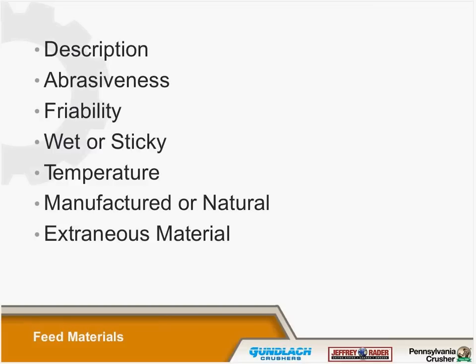Let's talk about describing feed material. We start with the size and shape of the material — is it slabby, round, or regular in shape? How abrasive is it? What is its Mohs hardness, which is a relative index from diamond at 10 down to something soft like rock salt? You'll also hear us ask about Hardgrove Grindability when talking about coal, and Bond's Work Index when talking about limestone. These are all ways to describe the abrasiveness or hardness of a material.